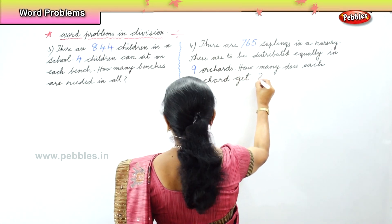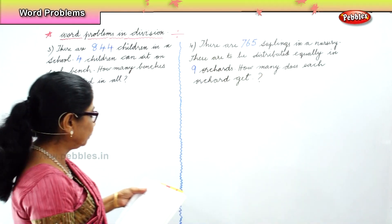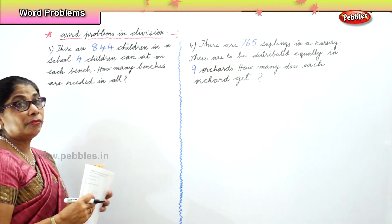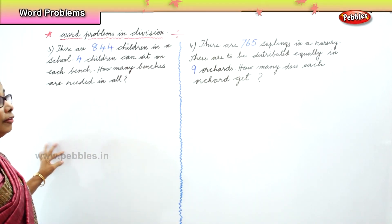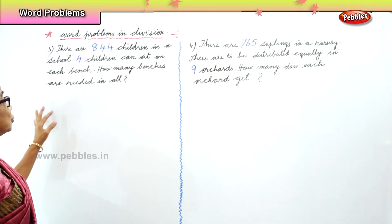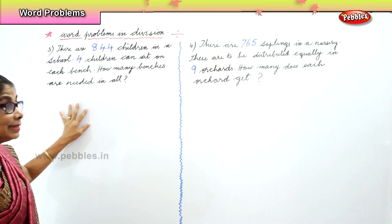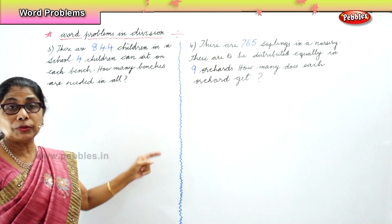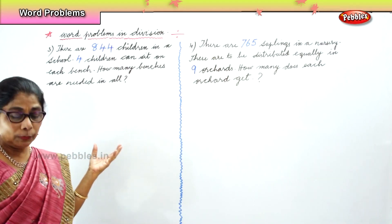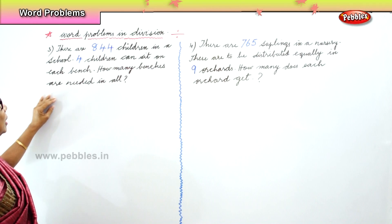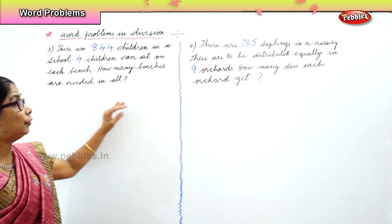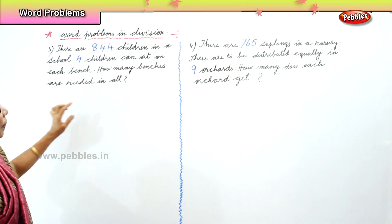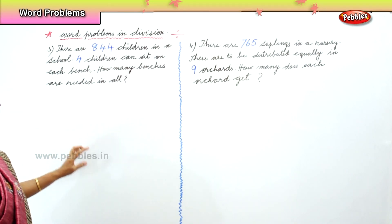We have two problems to work on. Let's look at the first one. There are 844 children in a school. Four children can sit on one bench. How many benches are needed in all? So what will be the statement? Total number of children in the school: 844. Number of children in one bench: four. Therefore, number of benches needed.